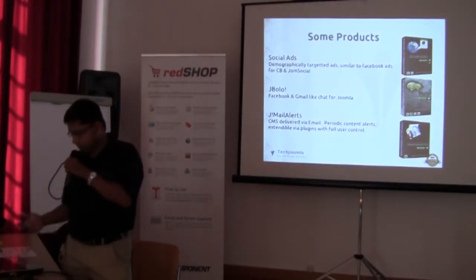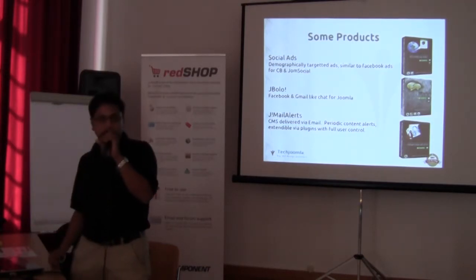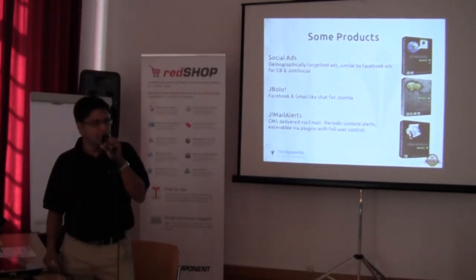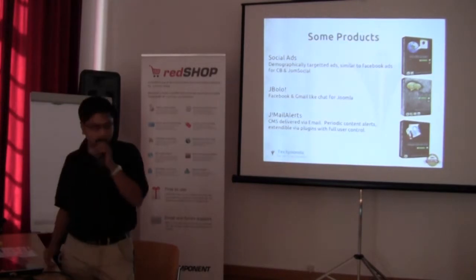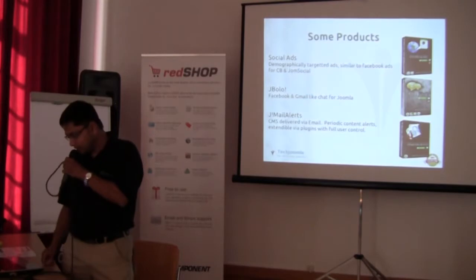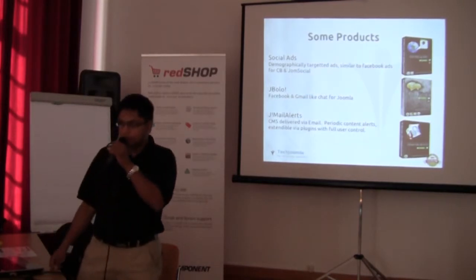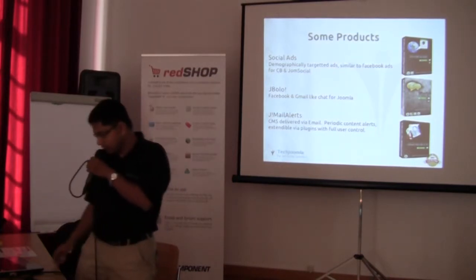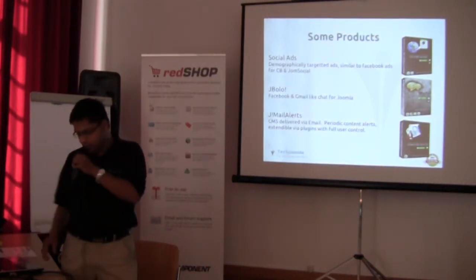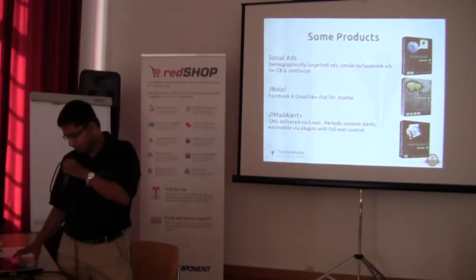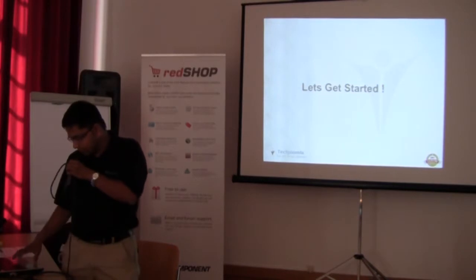These are a few of our better-known extensions. Social Ads allows you to create advertisements like Facebook which are demographically targeted, so you can have advertisements targeted towards females, kids, and things like that. JBolo is a chat application for Joomla that allows you to have chatting features like Facebook or Gmail. Mail Alerts is a daily digest component like Google Groups. Let's get started with the REST API.